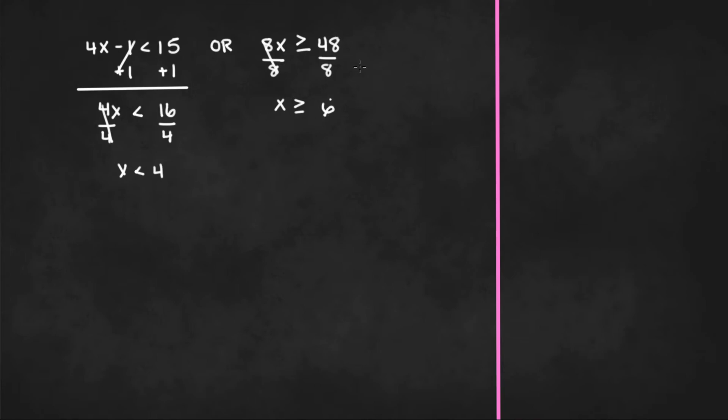Now since we have two equations we can graph both equations on a number line and then combine it on the final number line.